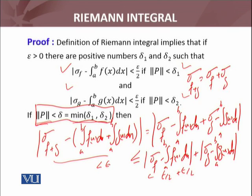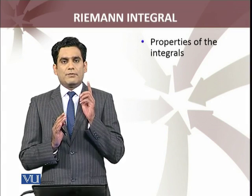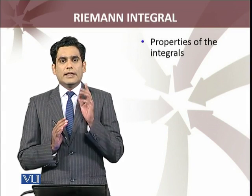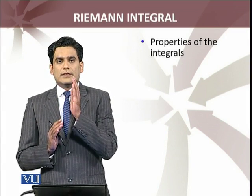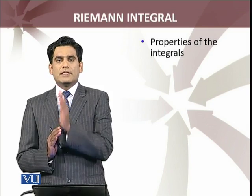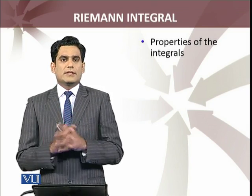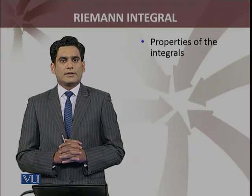So, for every epsilon greater than 0, we have a partition P such that the Riemann sum of f plus g minus the target value is less than epsilon. This means that the Riemann integral of the function f plus g in fact equals the Riemann integral of f plus the Riemann integral of g. This is what we needed to prove. Thank you.